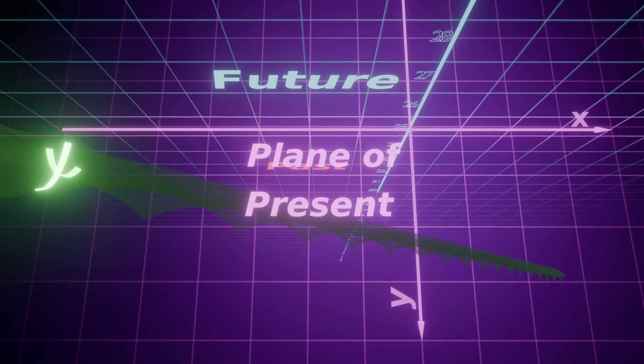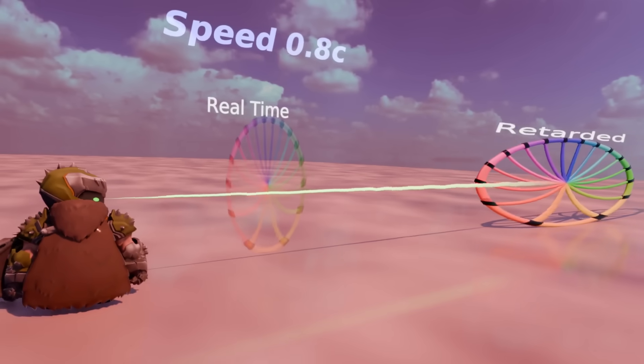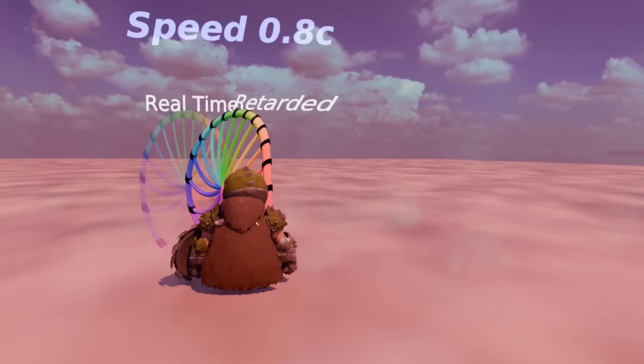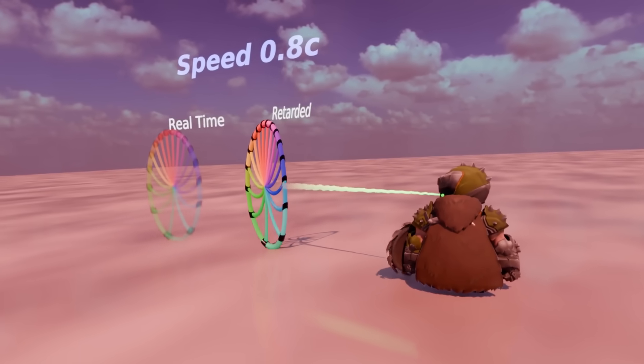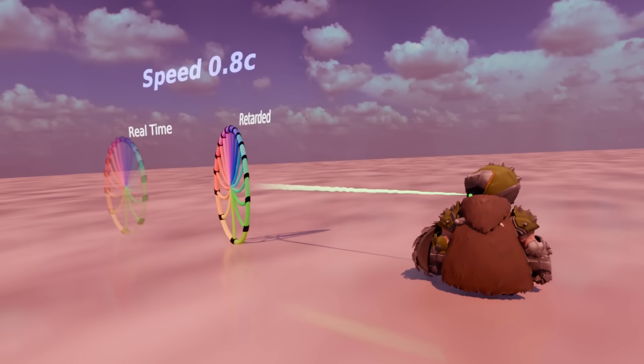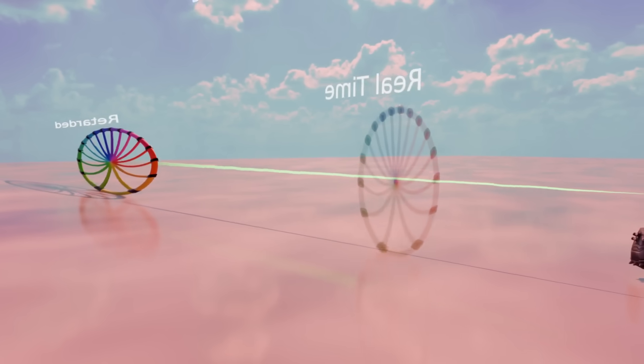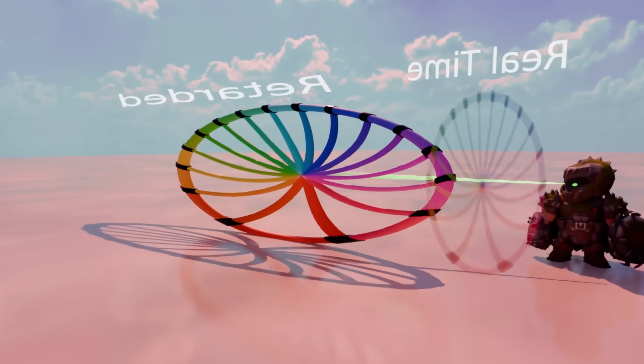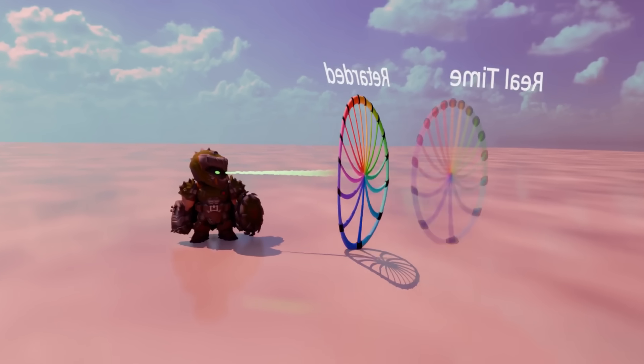The previous considerations have omitted the time it takes for the light to reach an observer's eyes. The toy figure represents our observer. The transparent wheel is the true real-time position of the wheel. But the solid wheel is how the observer perceives it.